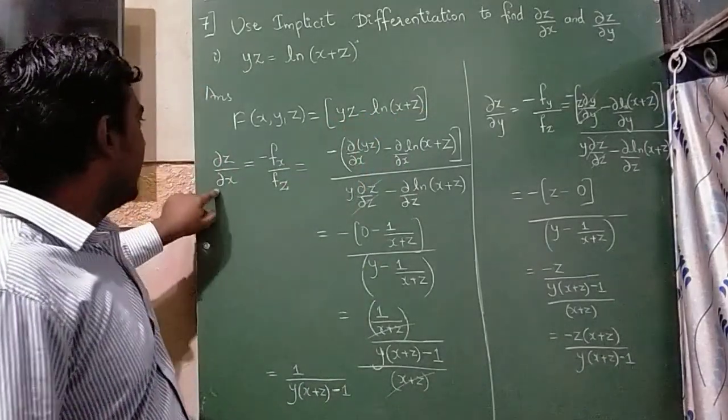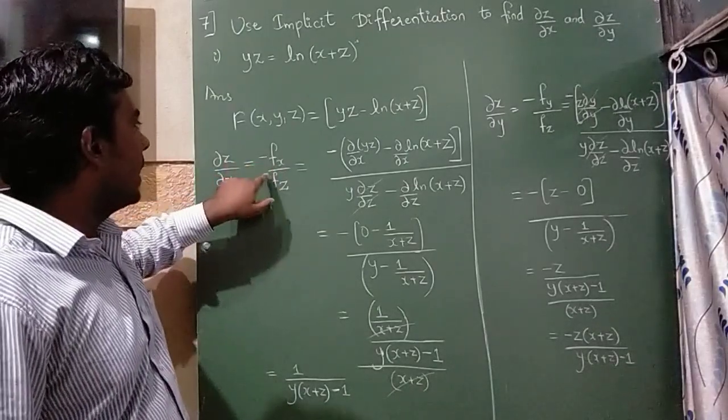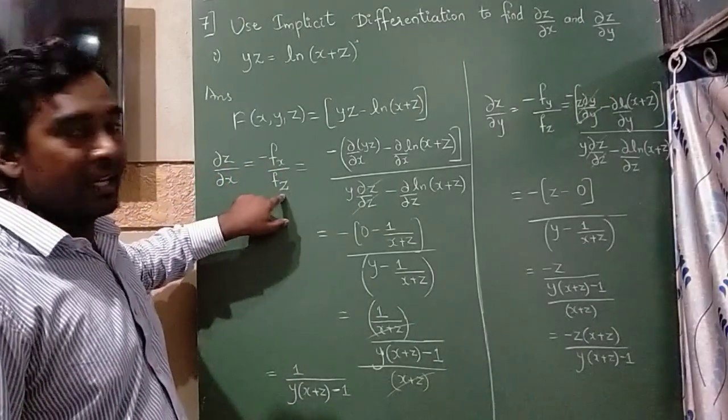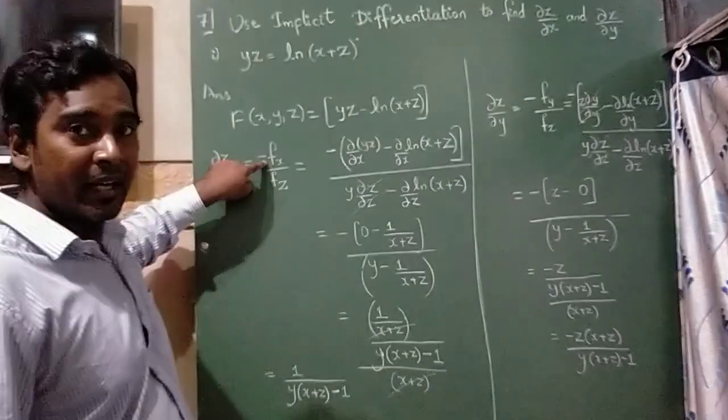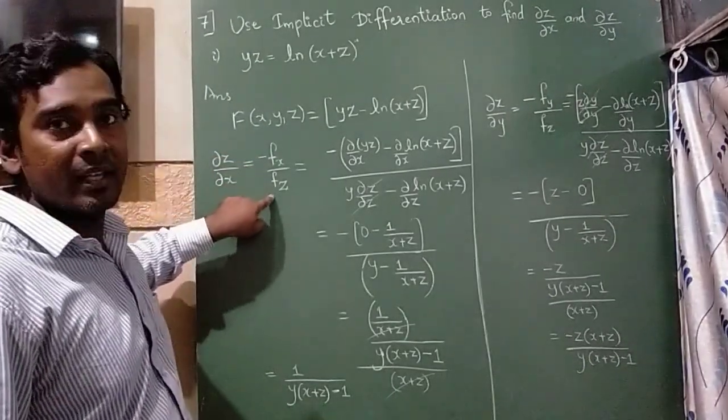So dz by dx, the formula is minus f of x divided by f of z. It means we need to differentiate numerator by x, denominator by z.